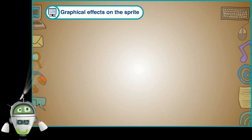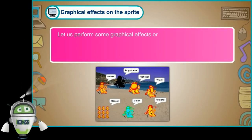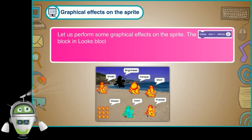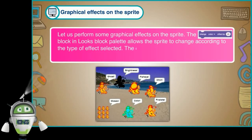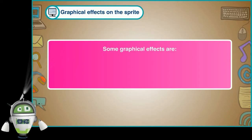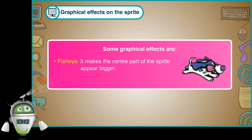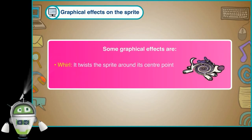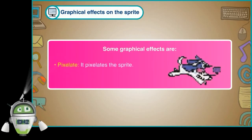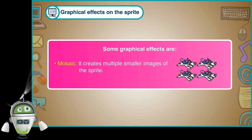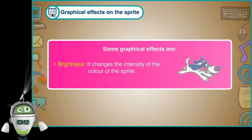Graphical effects on the sprite: Let us perform some graphical effects on the sprite. The block in Looks block palette allows the sprite to change according to the type of effect selected. The effect value can also be changed. Some graphical effects are: Color — changes the color of the sprite; Fish eye — makes the center part of the sprite appear bigger; Whirl — twists the sprite around its center point; Pixelate — pixelates the sprite; Mosaic — creates multiple smaller images of the sprite; Brightness — changes the intensity of the color of the sprite.